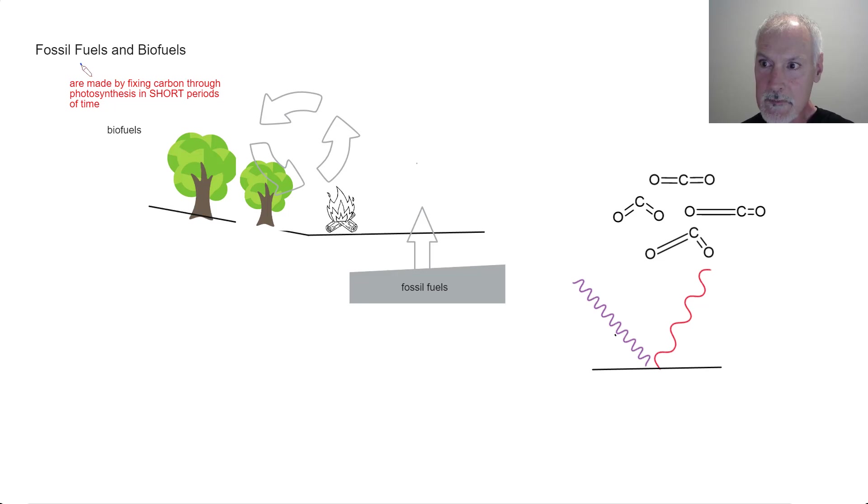We need to know the equation for photosynthesis. So maybe I'll put it up here. Carbon dioxide gas plus H2O liquid in the presence of sunlight or UV light will produce glucose and oxygen gas. Now to balance it, we'll need six there, six there, and a six in front of the oxygen.